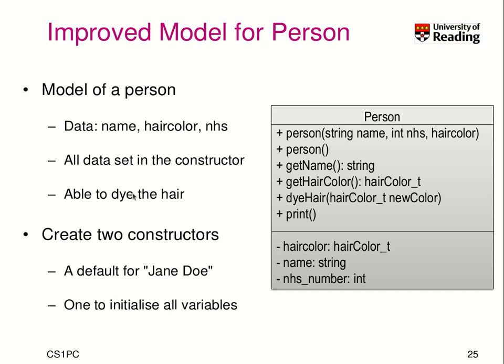This person should be able to dye the hair. So now we have our getters: get name, get hair color. But there is no way to set the name again — we remove that function. For hair color, we add the dye hair function. You specify the new color. Maybe it's not possible when you have black hair to dye it immediately blue — you'd have to first dye it white and then from white to blue. All this kind of logic can be implemented in such a method.